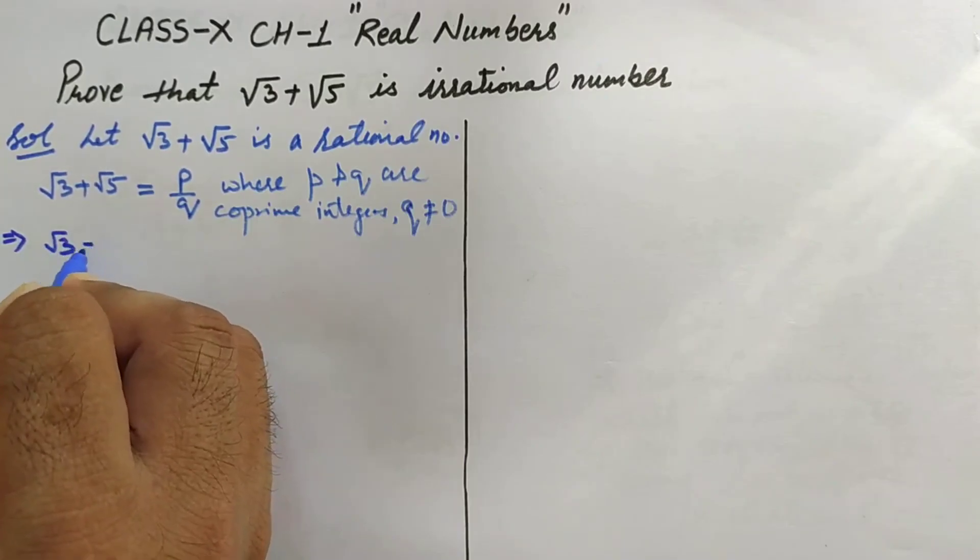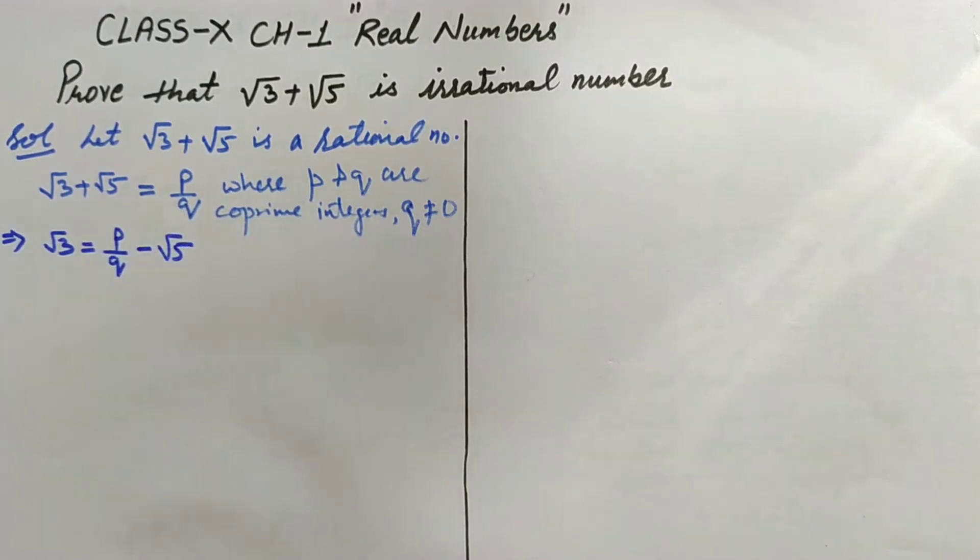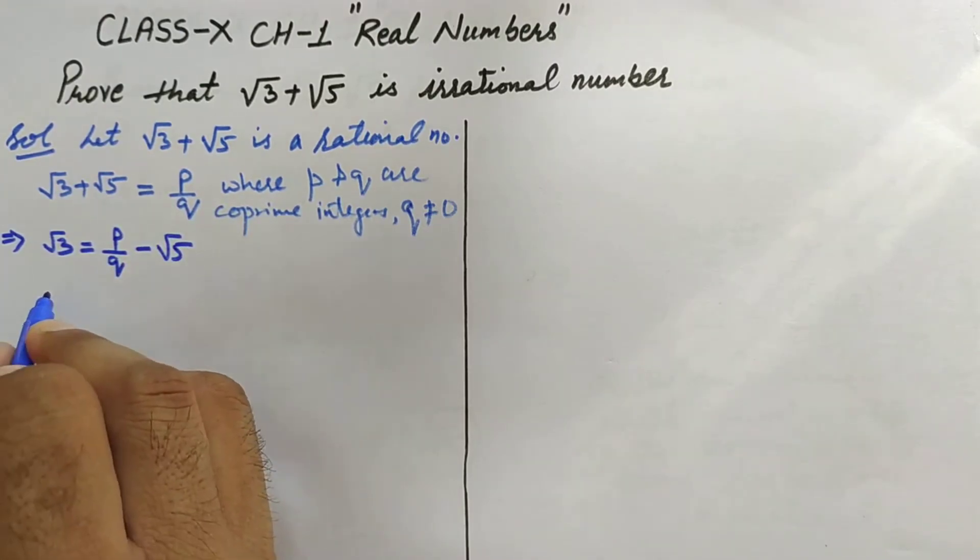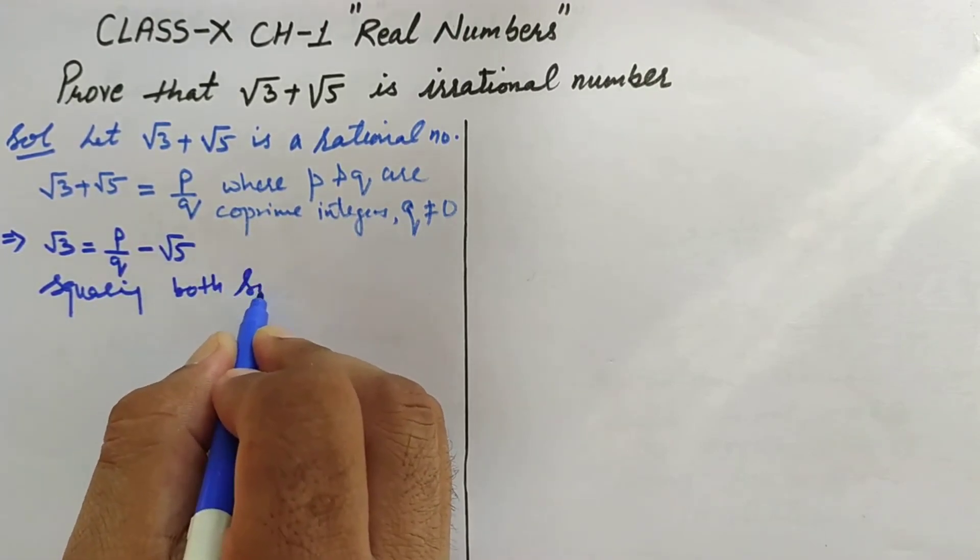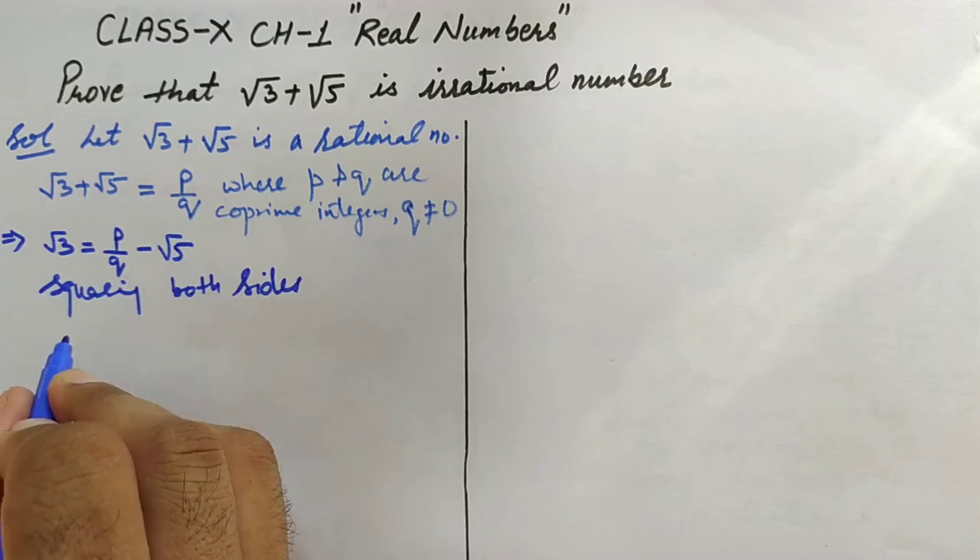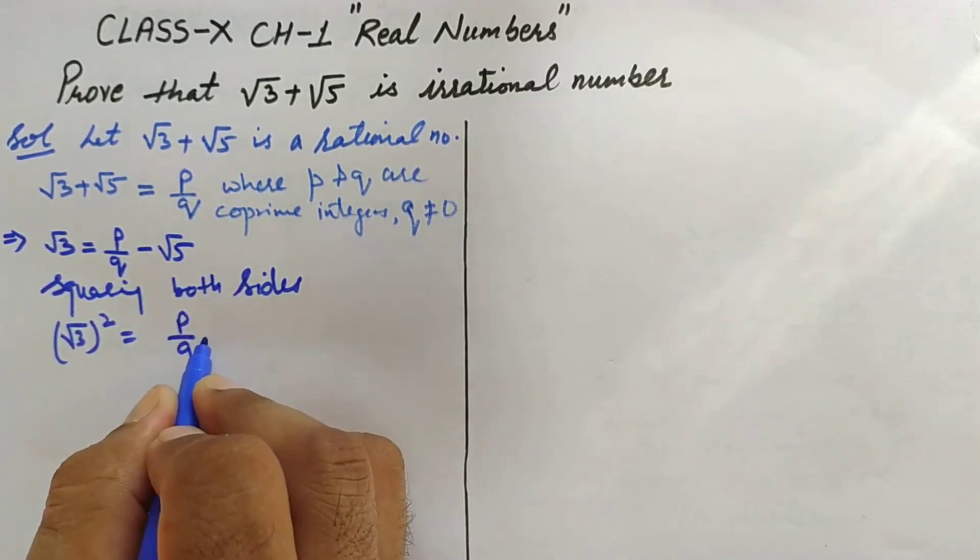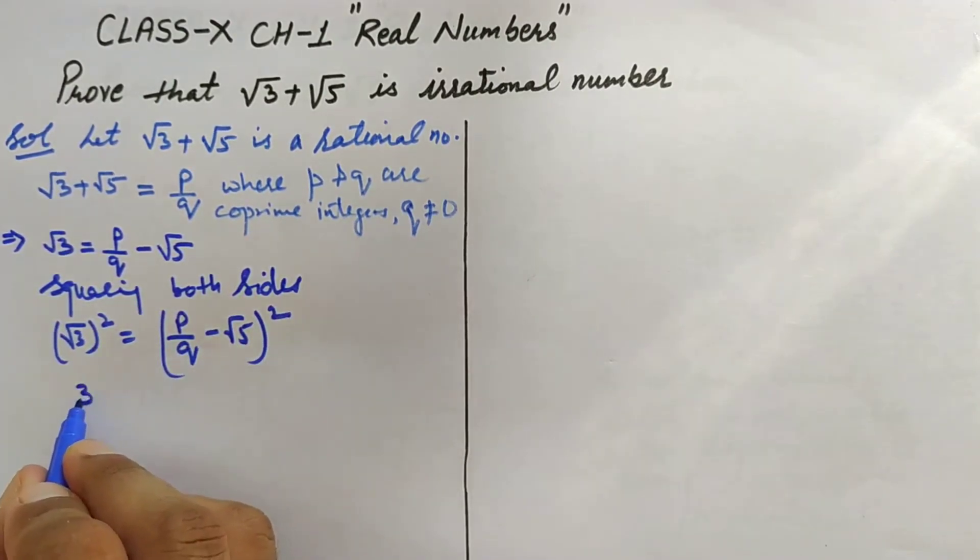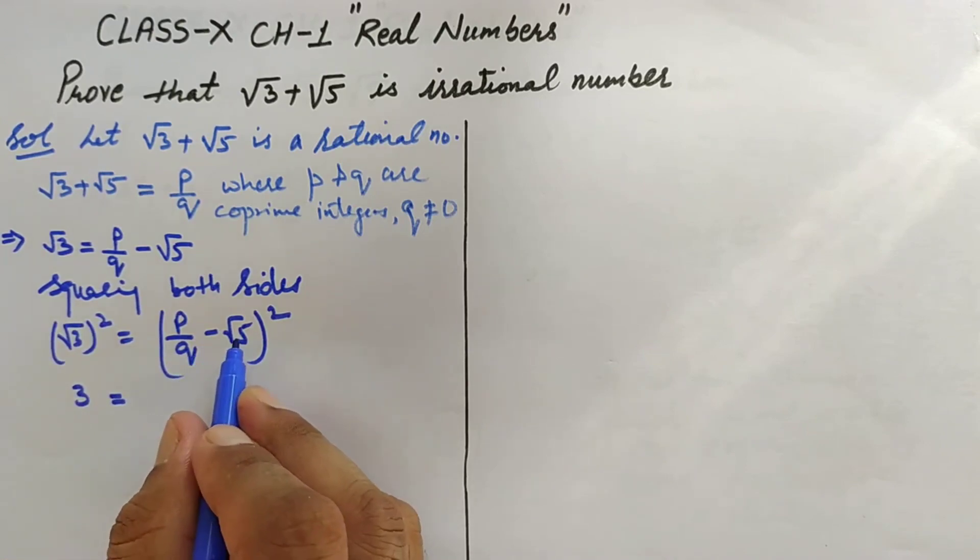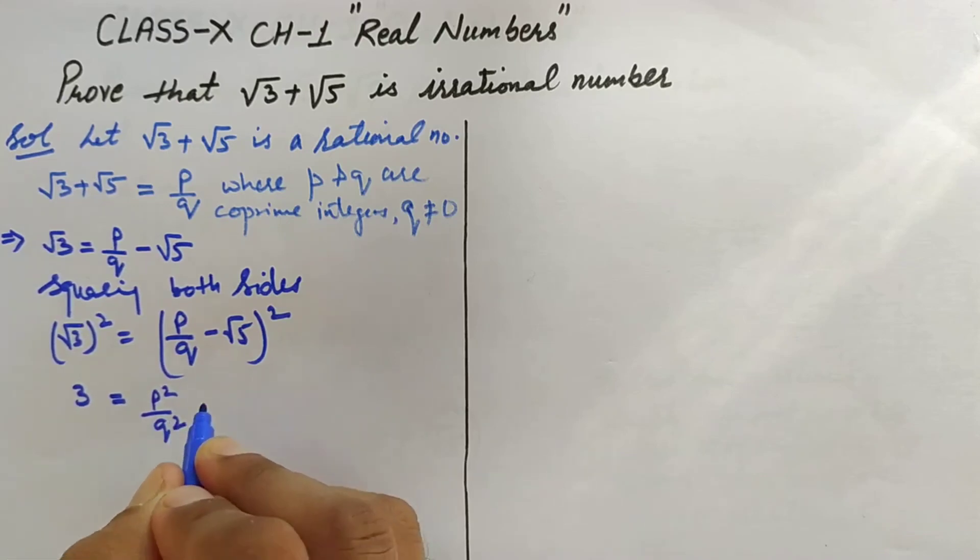√3 = p/q - √5. Now squaring both sides: (√3)² = (p/q - √5)². So √3 squared is 3, which equals (p/q)² + (√5)² - 2(p/q)(√5). That is p²/q² + 5 - 2(p/q)√5.